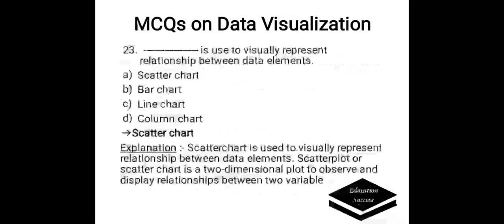Which is used to visually represent relationship between data elements? Options are: A. Scatter chart, B. Bar chart, C. Line chart, D. Column chart. Correct answer is scatter chart. Scatter chart is used to visually represent relationship between data elements. Scatter plot or scatter chart is a two-dimensional plot to observe and display relationship between two variables.